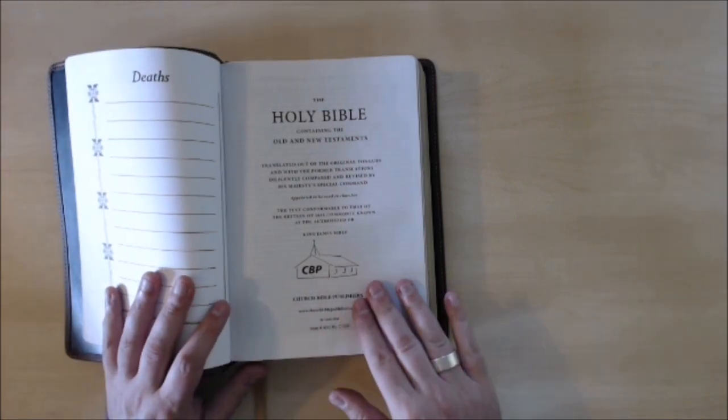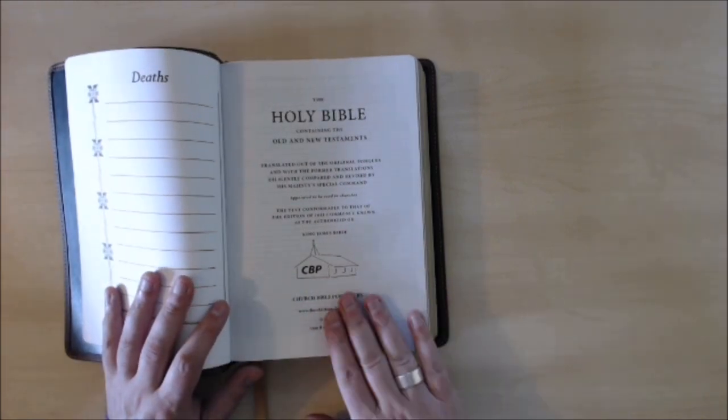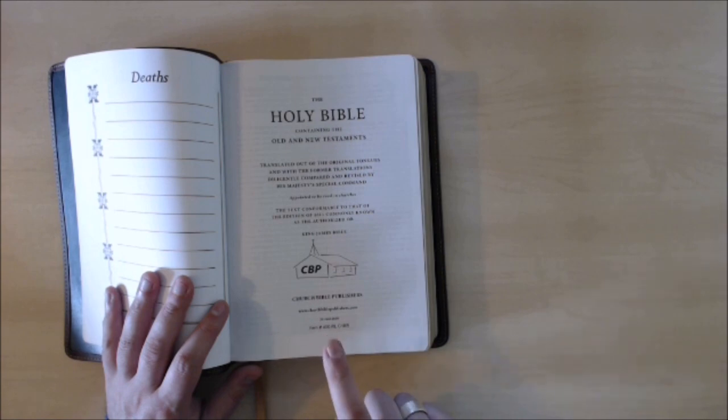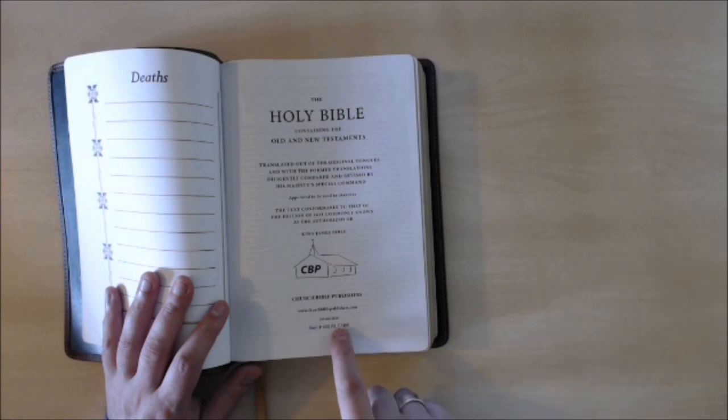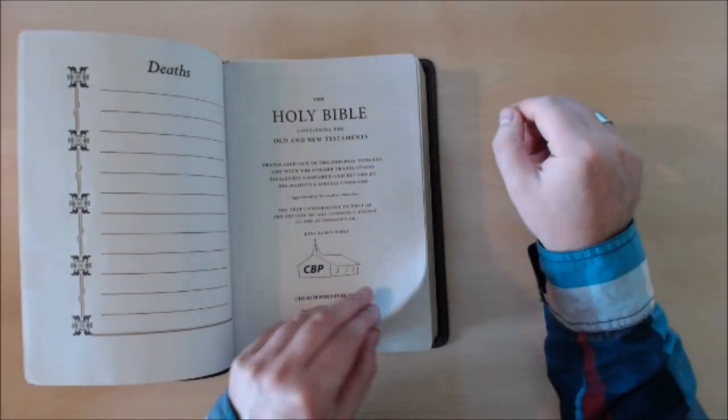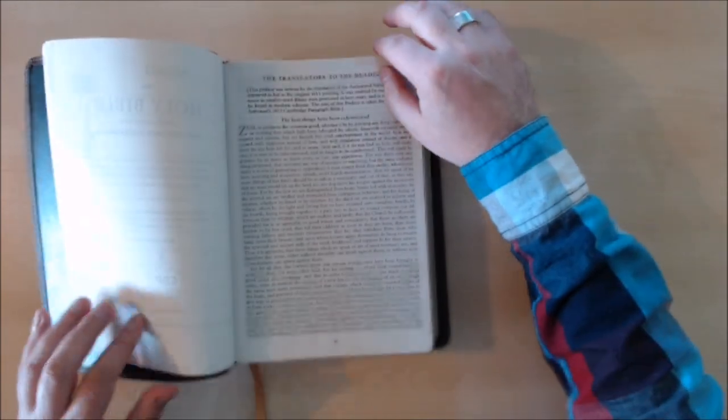Children, marriages, deaths. And then the presentation page here, and then it comes with the item number 400 red letter edition in calf skin, one piece in brown color by Church Bible Publishers dot com, that's their website. Comes with the translators to the reader.